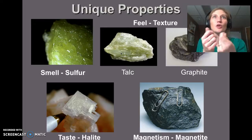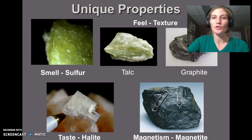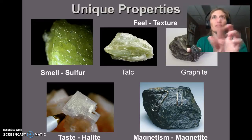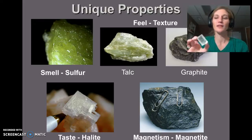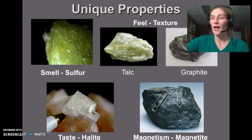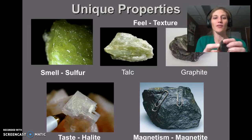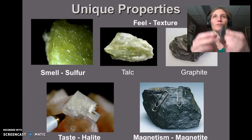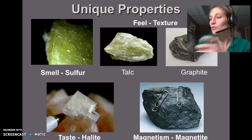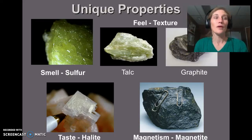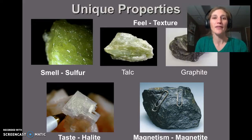Other properties include smell — sulfur smells like rotten eggs; feel — talc and graphite have a soapy or greasy feel; taste — sample 6 tastes like salt; and magnetism — magnetite attracts metal objects. The speaker's magnetite sample has tiny iron filings sticking to it, demonstrating its magnetic property. That's a quick run through of all the properties; questions can be posted to the 'I need help' discussion.